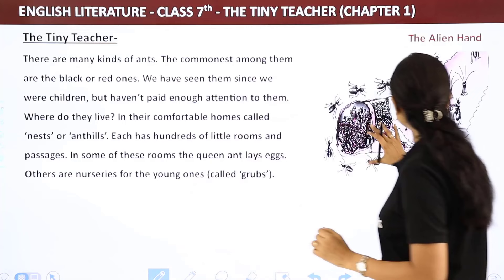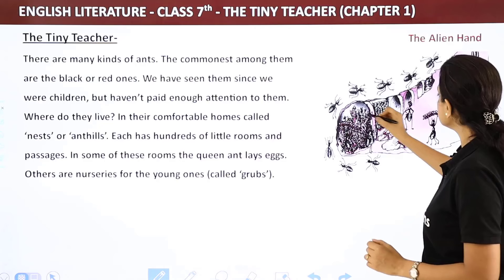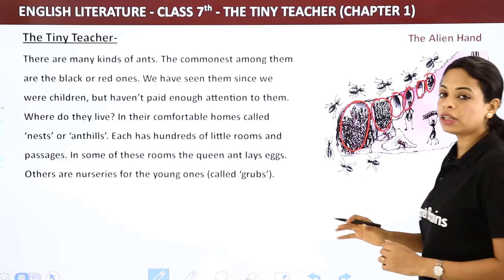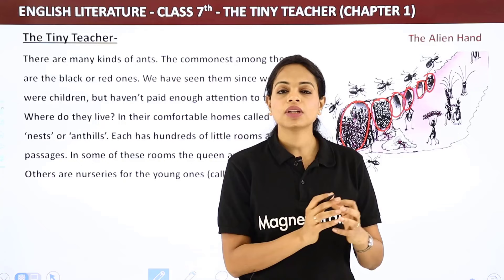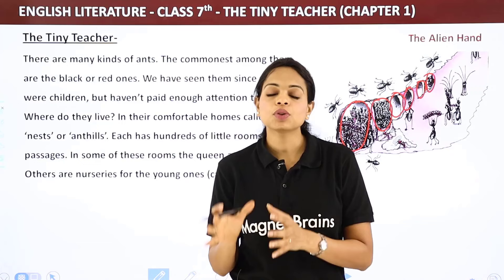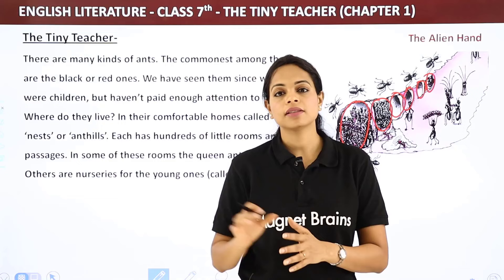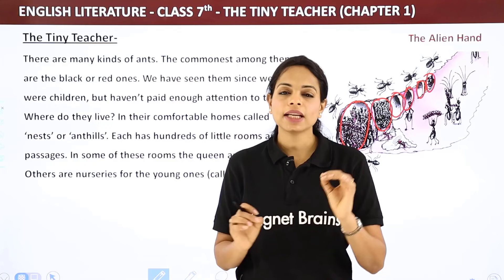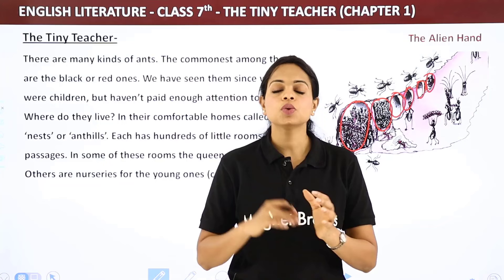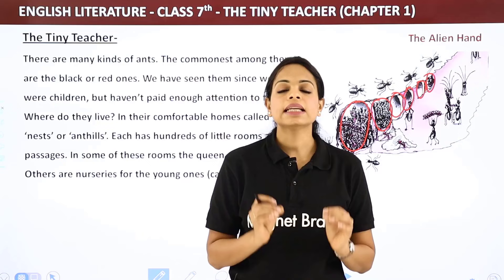In some rooms of the ant hill, the queen ant lays eggs. Others are nurseries for the young ones — just like a nursery for small children, where the tiny grubs are kept, cleaned, and cared for. Workers take care of the grubs: they clean them, air them, and take care of their exercise and health in the nurseries.